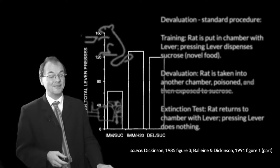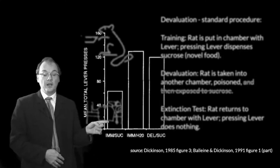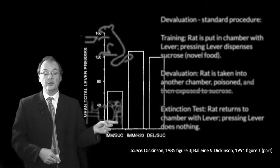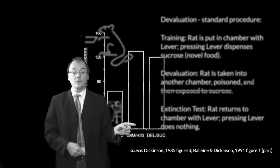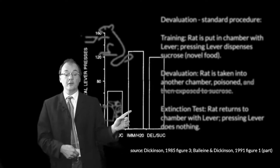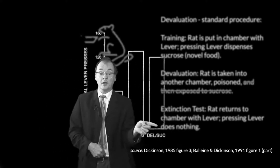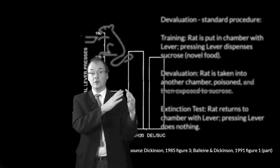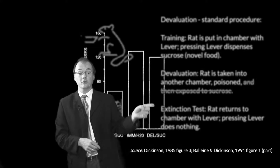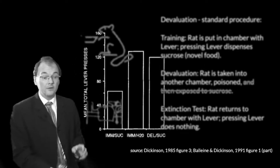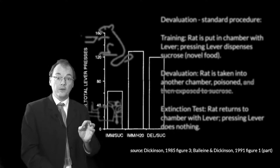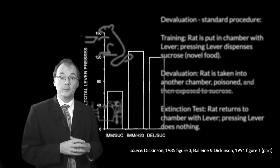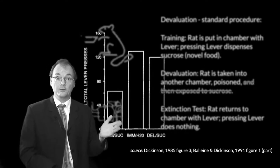And let's see what happens. So here: a rat that was poisoned and then given experience of the papaya is pressing the lever quite a bit less than the other rats. But a rat that was poisoned with the same toxicosis but didn't get a chance to re-experience the papaya or sucrose solution is tapping away just as much as a third group of rats who were not given the sucrose solution in connection with toxicosis at all — so are not averse to it — but were given the experience of the sucrose solution. What we've learned is something very simple and beautiful: if you take a standard devaluation procedure but remove any encounter with the novel food after the rat has experienced the poisoning, you don't get the standard devaluation effect — the reduced lever pressing.